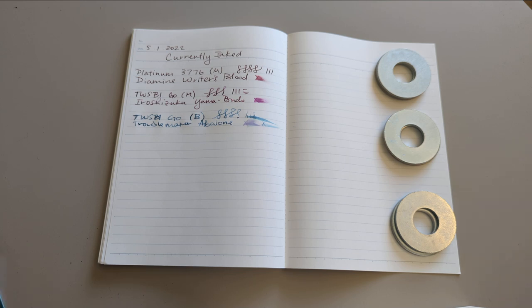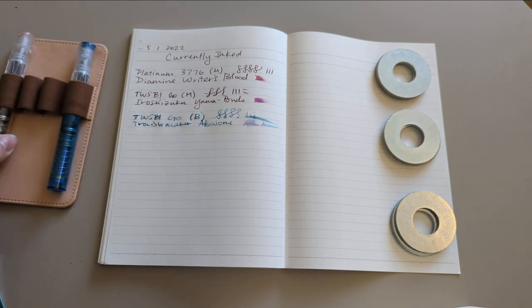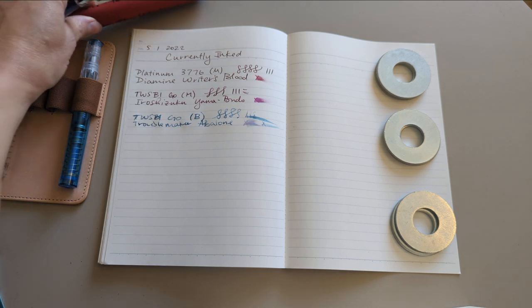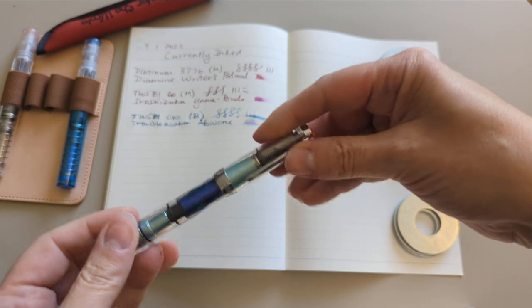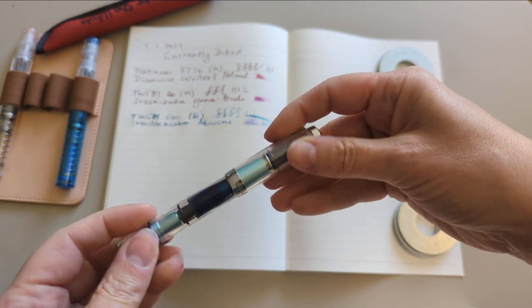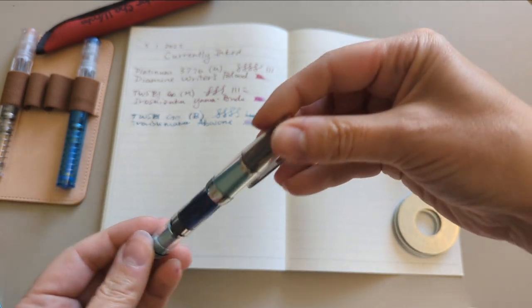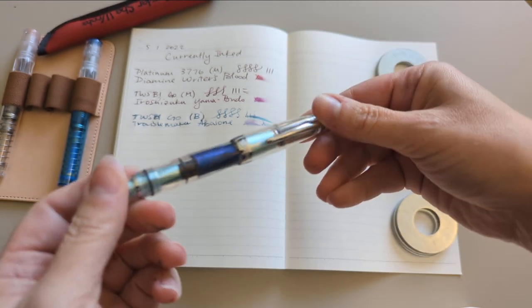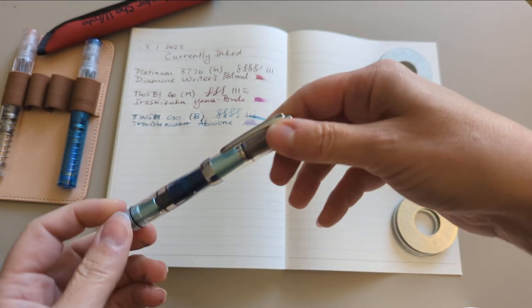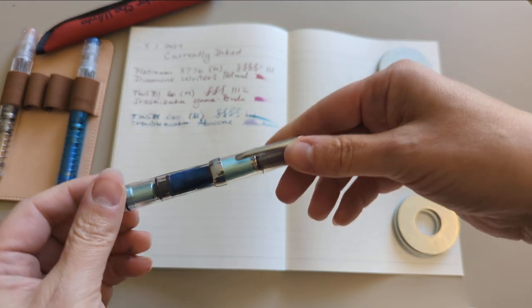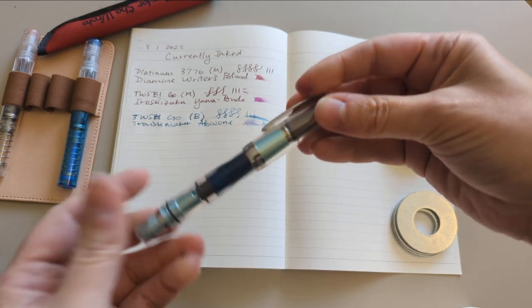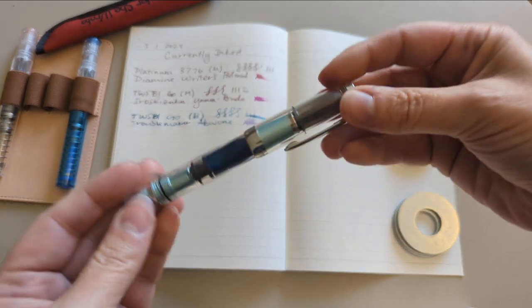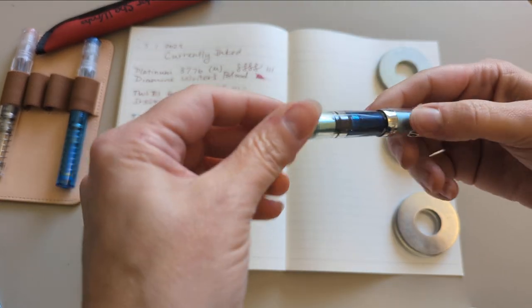Next up is this pen which I just got and didn't make a video of, it's fine. This is a Twsbie mini, Al Diamond Mini in the mint colorway.